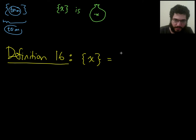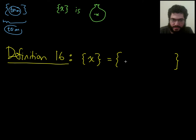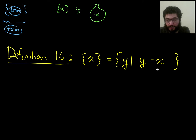So here's the new notation. It's a term, so I'm writing an equal sign here, and it's defined to be something that is already defined — something that already has meaning. What goes here is: it's the set of y such that y equals x. So that's the set of things that are equal to x, or in other words, the set of things that are x.